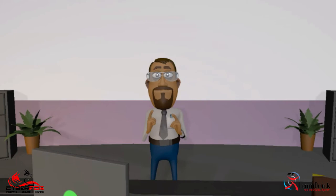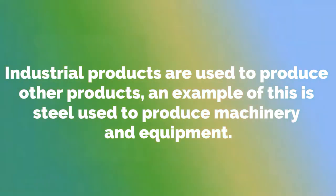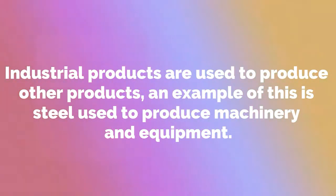Products are categorized into a number of broad categories. We will look at some of the categories and the type of products they include. Industrial products are used to produce other products. An example of this is steel used to produce machinery and equipment.